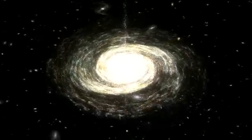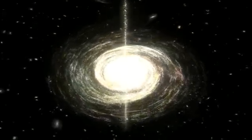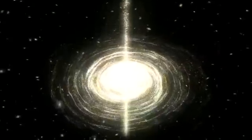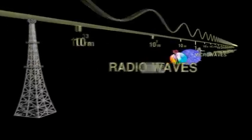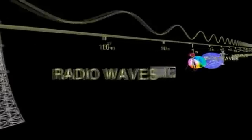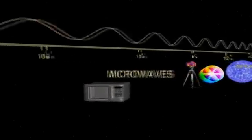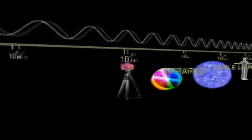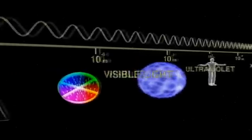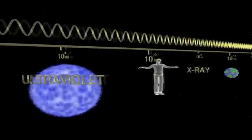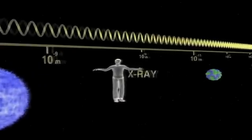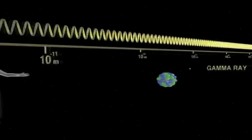Gamma rays are the highest energy form of electromagnetic radiation or light. At the very long wavelength or low energy end are radio waves. As you increase the energy or decrease the wavelength, you go up through the electromagnetic spectrum to where we see with our own eyes. And as the energy increases, you go through ultraviolet, then X-rays, and then gamma rays.